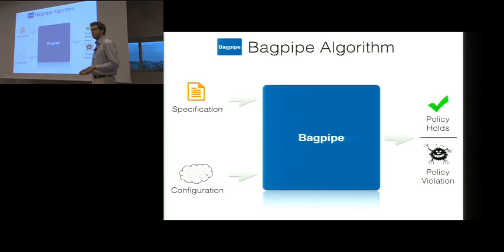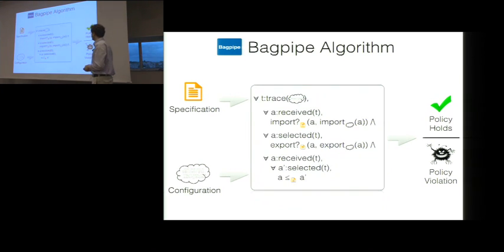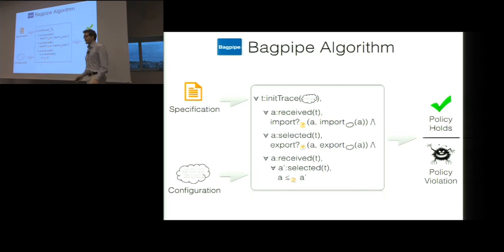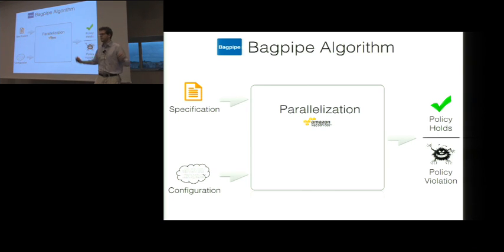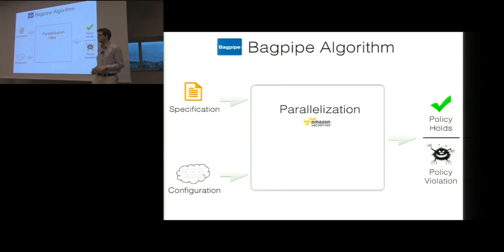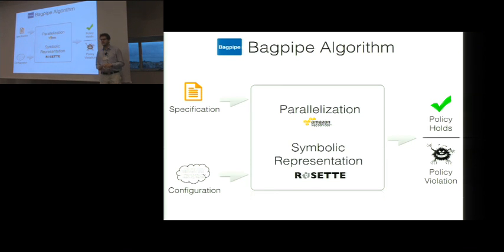Now that we have this insight, we can implement it in our tool. Instead of checking the infinite set of traces, we replace it with the set of initial traces, which is now a finite search and at least somewhat feasible. However, this state space is still very large, so we can't just brute-force search it. First, we partition the space into smaller spaces by the paths that announcements take through the network — each partition can be solved on a different node in a cluster. Second, we do symbolic execution using an SMT solver to symbolically check whether the specifications hold for a symbolic announcement on every path.